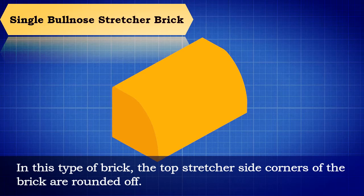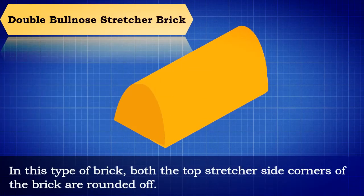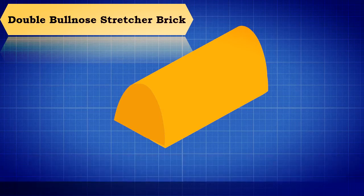Double bull-nose stretcher brick: in this type of brick, both the top stretcher side corners of the brick are rounded off.